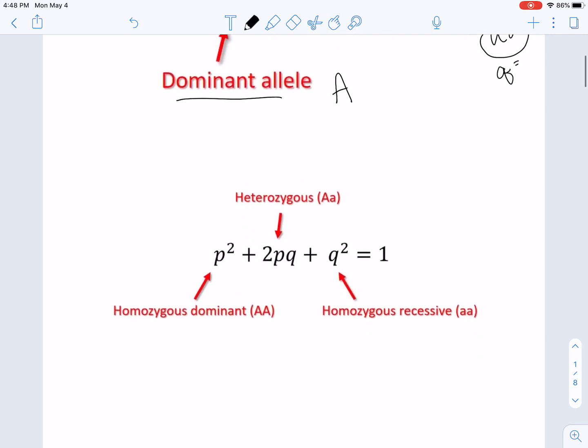Remember that when we went through in the notes, we talked about these are the genotypes. So this is talking about all of these alleles and all of these alleles. This would be P and this would represent Q. So that's how you read that equation.